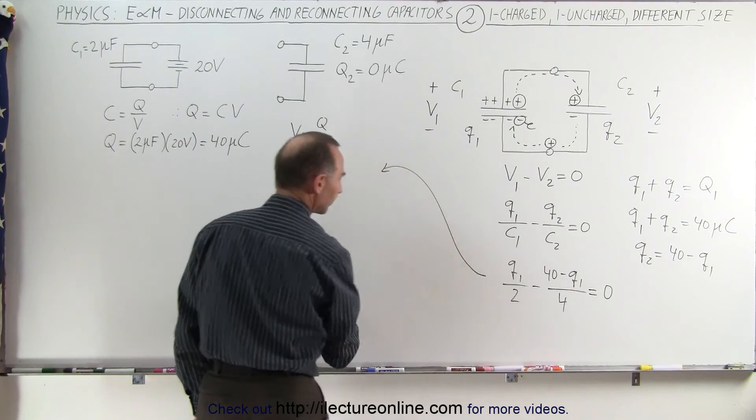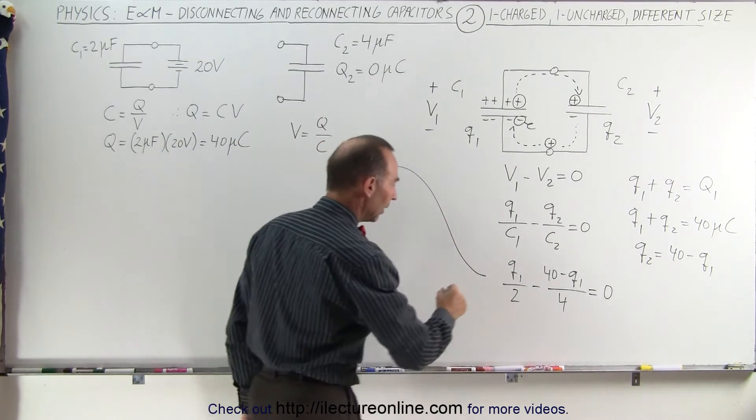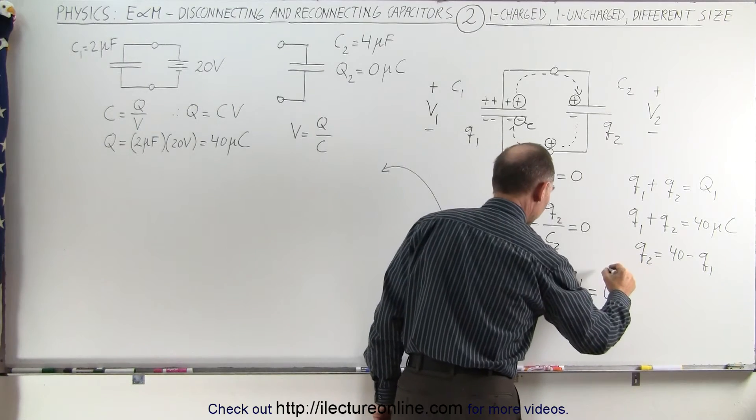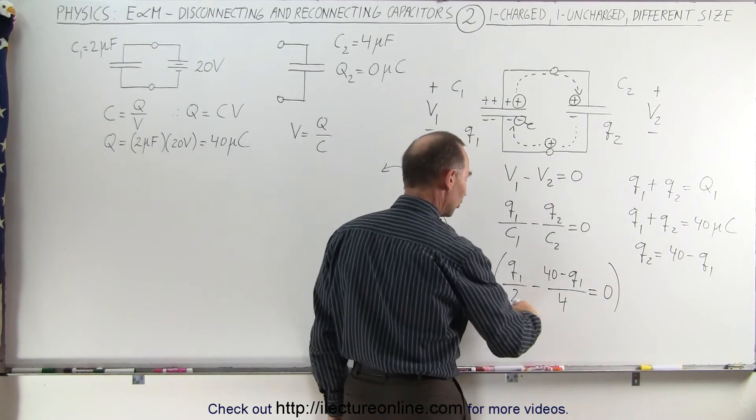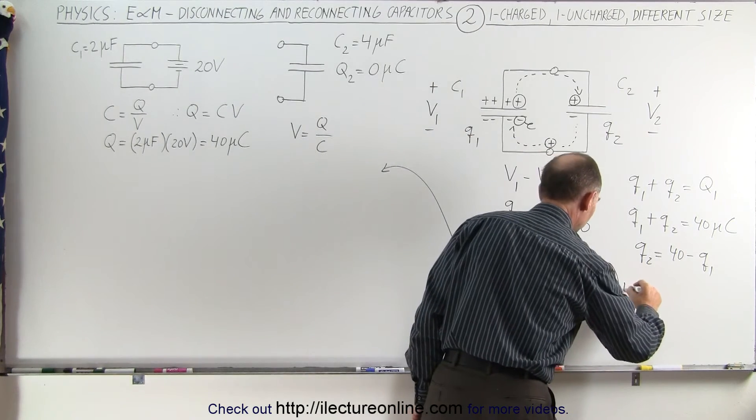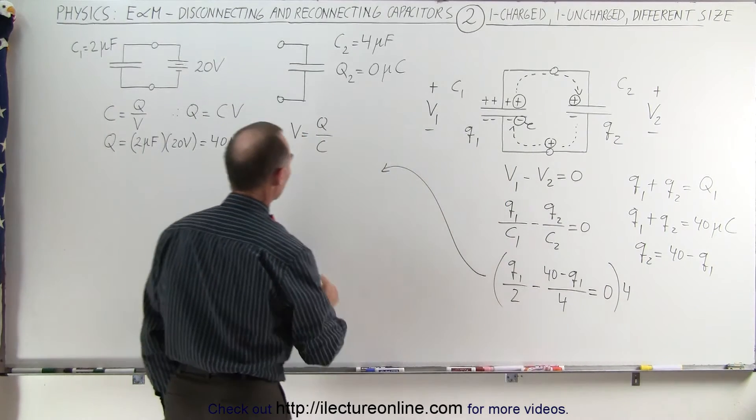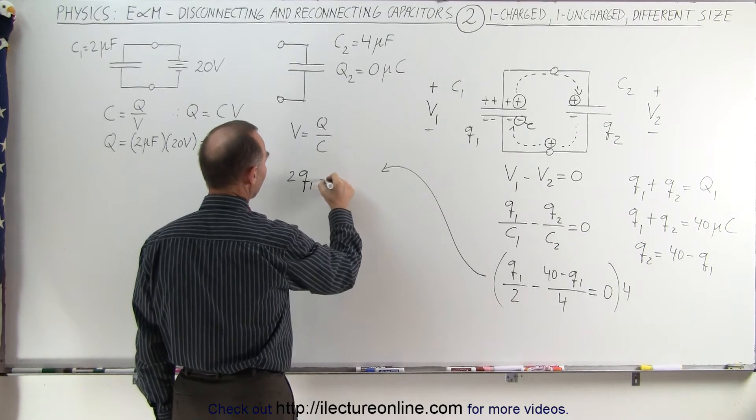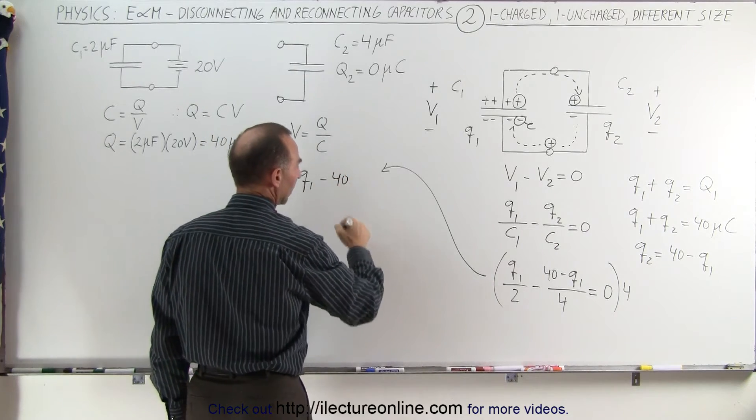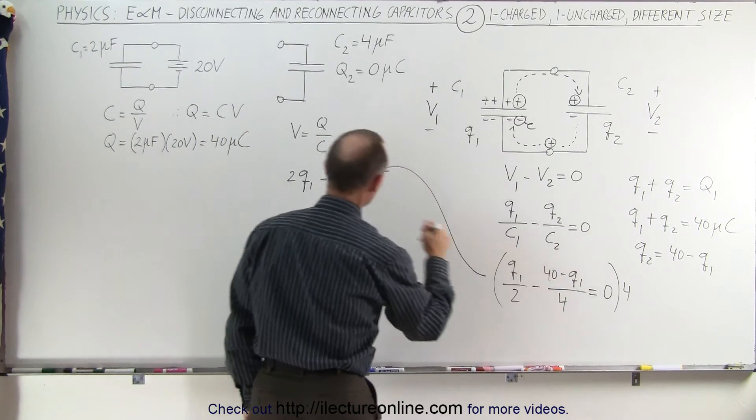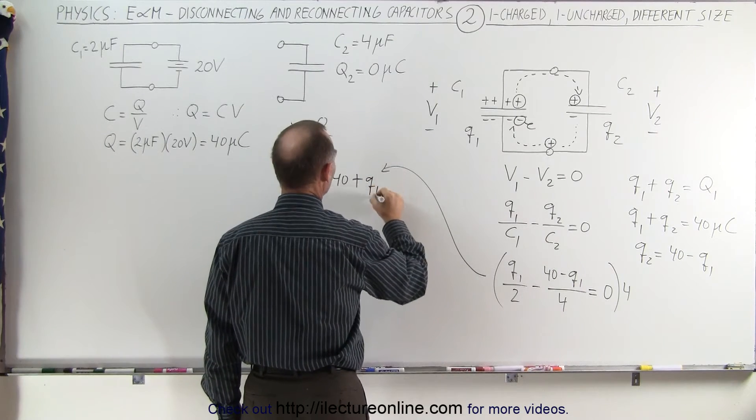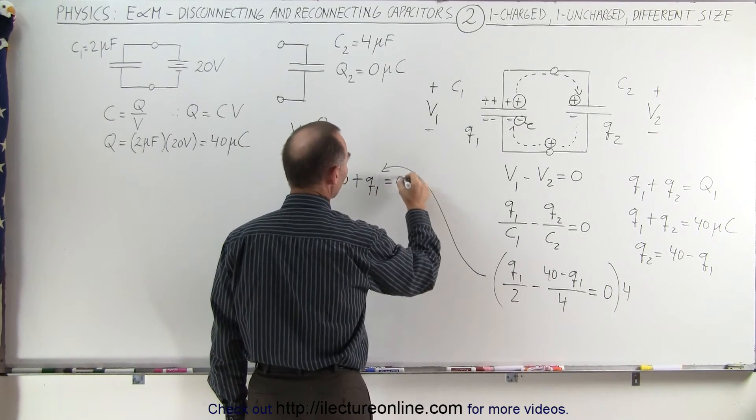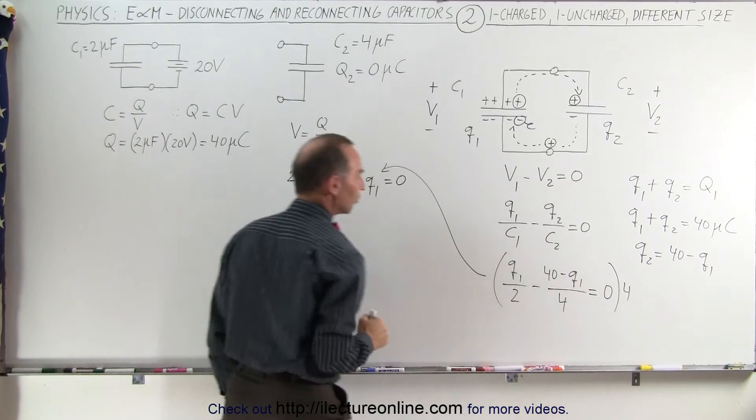Coming up here, we're going to multiply both sides of the equation by the lowest common denominator, which is in this case 4. So multiply both sides by 4. What we get here is we get 2Q1 minus 40, and then the minus times the minus would be plus Q1 is equal to 0, because 0 times 4 still gives you 0.